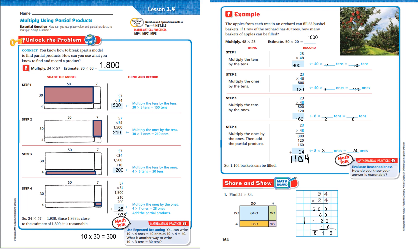So again, I multiplied my tens by my tens, my tens by my ones, my ones by my tens, and my ones by my ones. Added them all up and I got 1,104.